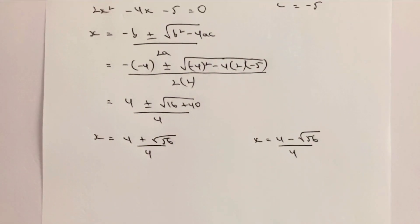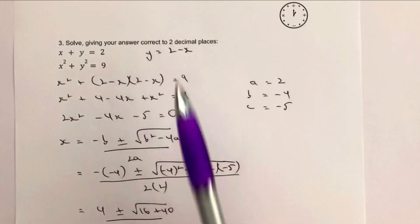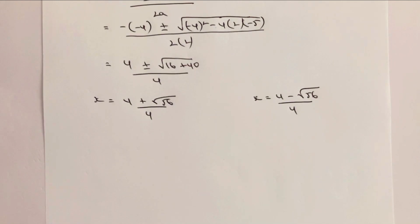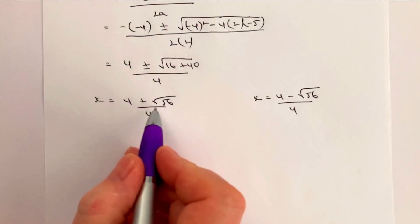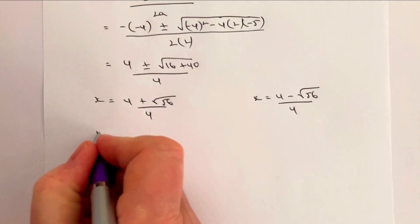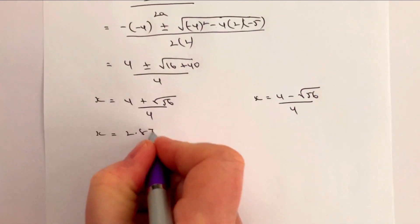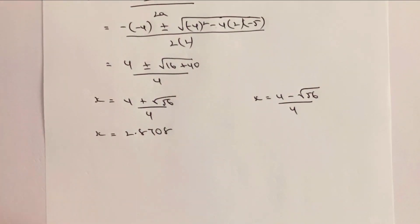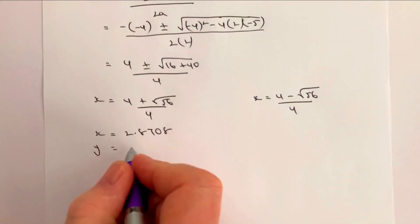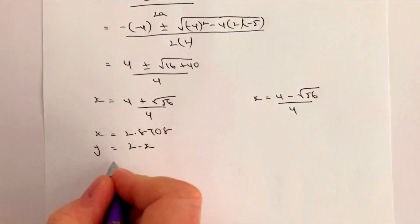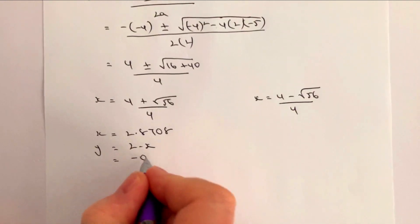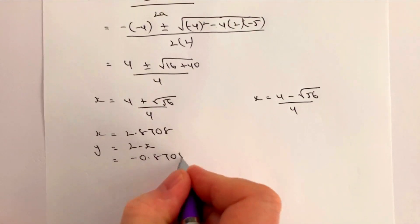And then really it's just a case of using these values and substituting them into our original y equals 2 minus x in order to get our values of y as well. So when I calculate all of this out I'm going to get x equals 2.8708. Okay, and if I substitute for y I'm going to get y equals 2 minus x, which is therefore going to be minus 0.8708 as well.